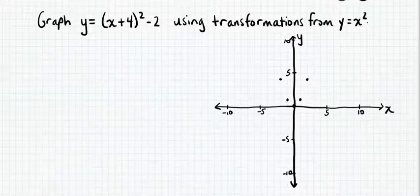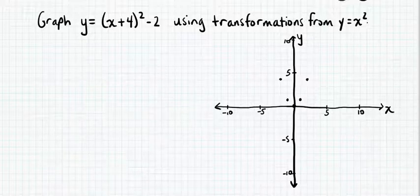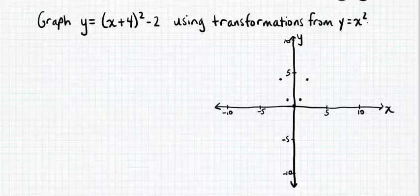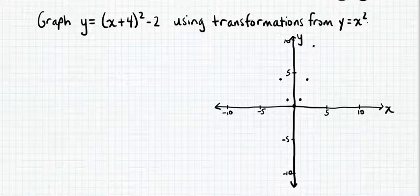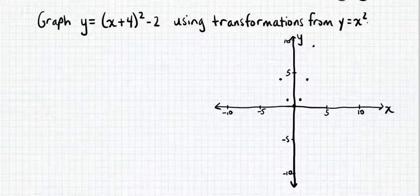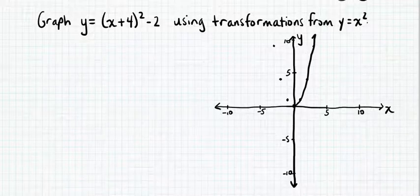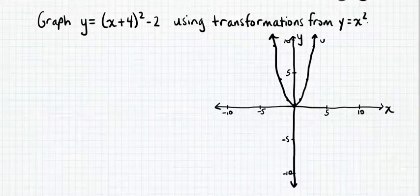That's because 0 squared is 0, 1 squared is 1, negative 1 squared is also 1, 2 squared is 4, and negative 2 squared is also 4. For a little more detail, you can add the points (3, 9) and (−3, 9) if you have space on your grid. So at least use those five key points in the middle, then draw a nice smooth curve through those points — that's our graph of y equals x squared.